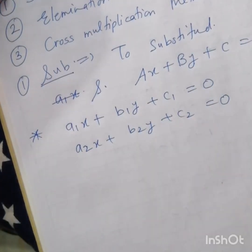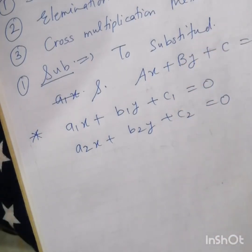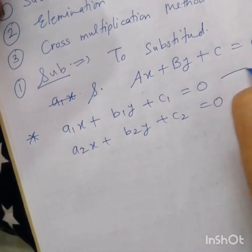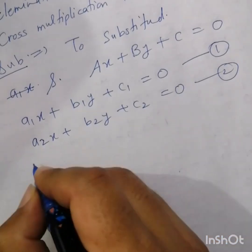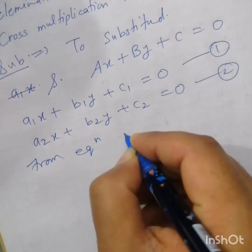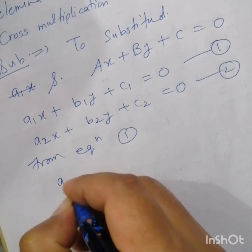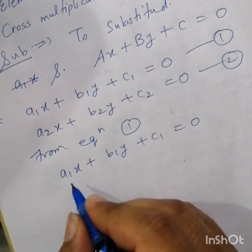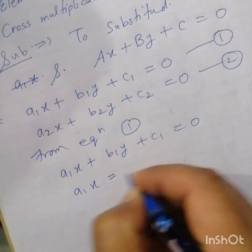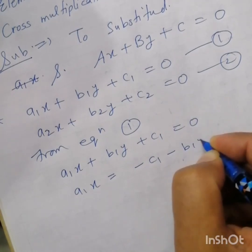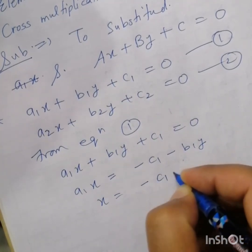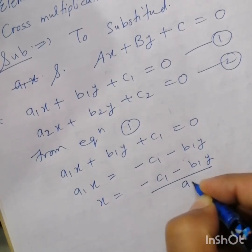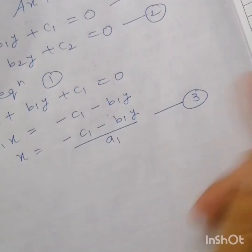By using substitution method, we have to find the value of x or y in terms of another variable, then put that value in the other equation. From equation one, given a1x plus b1y plus c1 equals zero, we get a1x equals minus c1 minus b1y.